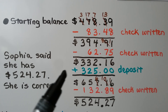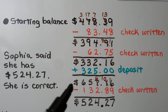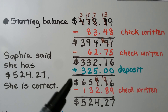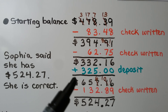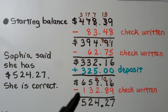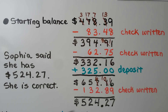Then we add her deposit of $325 and get $657.16. Then we subtract the last check she wrote and get $524.27. Sophia said that's how much she had, and she's correct.